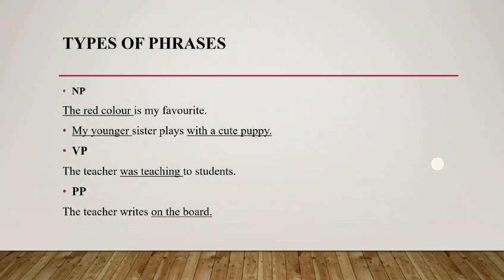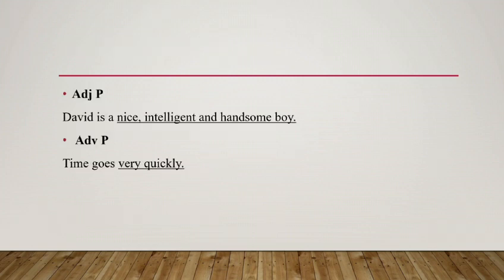The third type is prepositional phrase. A word or group of words that indicate where things are in relation to one another. For example, 'the teacher writes on the board' — 'on the board' is a prepositional phrase. The fourth type is adjective phrase. A word that describes a noun or a pronoun. For example, 'David, a nice, intelligent, and handsome boy' — 'nice, intelligent, and handsome' is an adjective phrase.